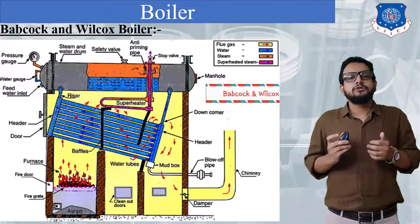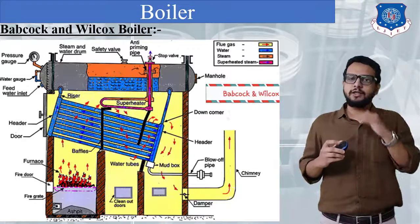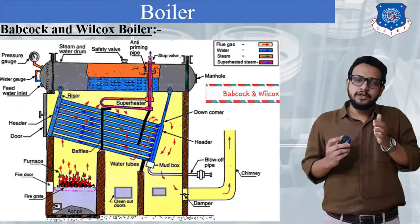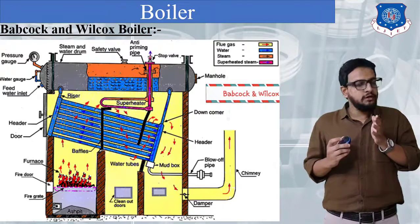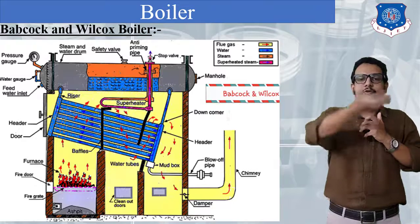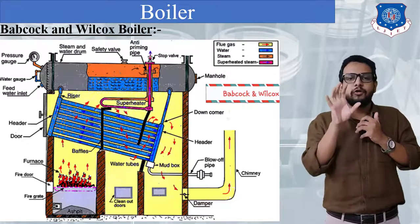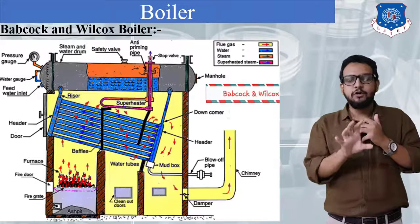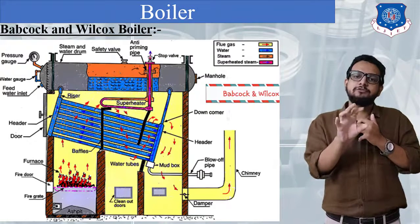Now let's understand the working of this boiler. First of all we are going to fill water into the boiler shell through the feed check valve up to the safe water limit shown by the water level indicator. After filling, we are going to fill coal onto the grate of the furnace. After placing the coal we are going to do its combustion. After combustion, hot gases will be generated and their flow will start in an upward direction. Once the flow of hot gases starts, heat transfer will take place from these hot gases to the water tubes.